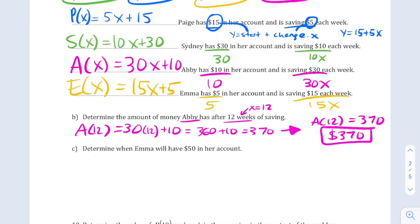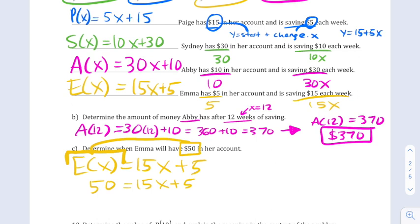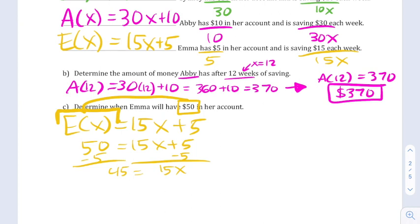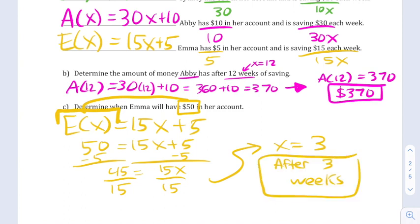Next, they ask us to determine when Emma will have $50 in her account. Emma's equation is e of x equals 15x plus 5. We want the final amount to be 50. That's the e of x. Not just the x, but the e of x. In other words, the y. So they're really asking us to solve this equation. 50 equals 15x plus 5. So I'll subtract 5 from both sides and then divide by 15 to get x equals 3, which means she'll have $50 after 3 weeks.